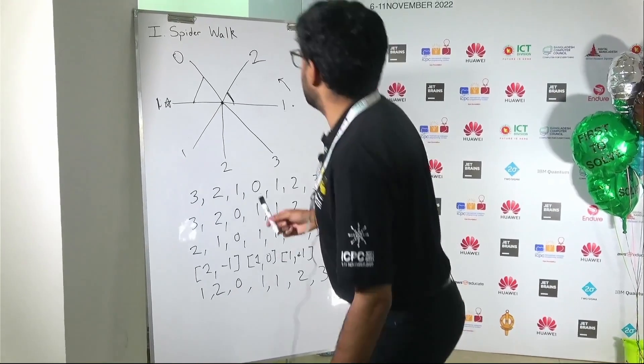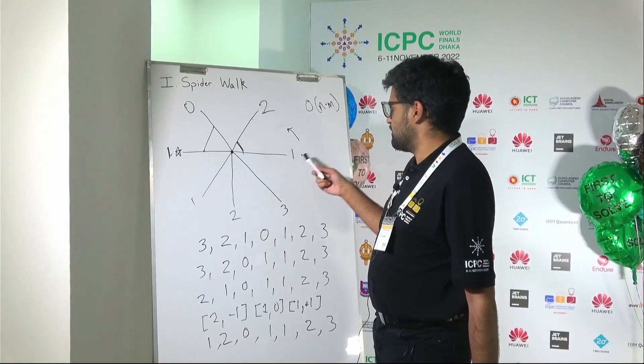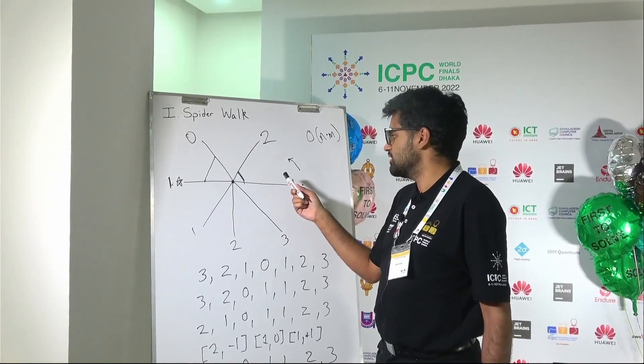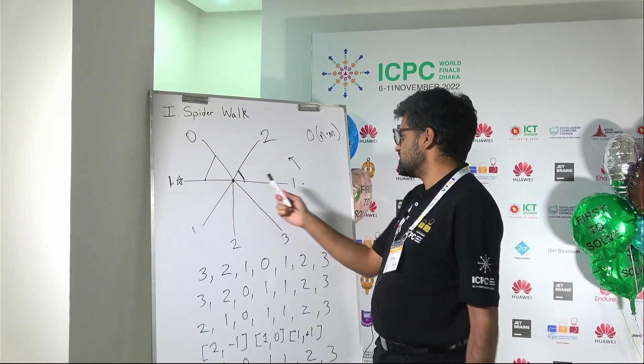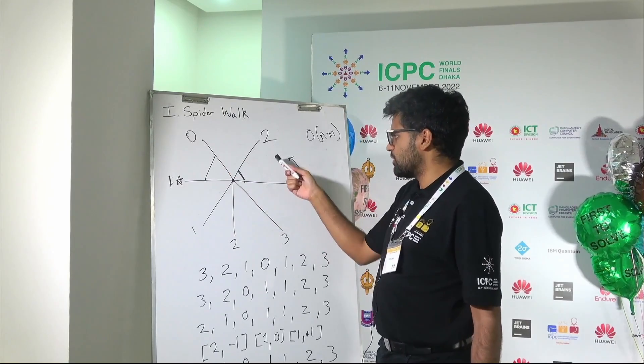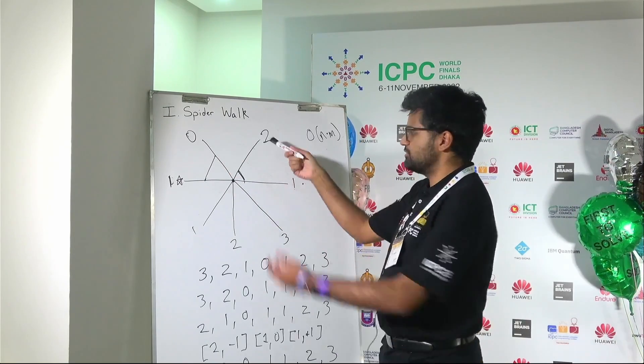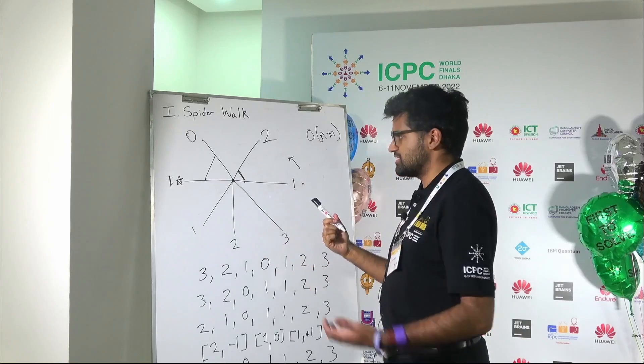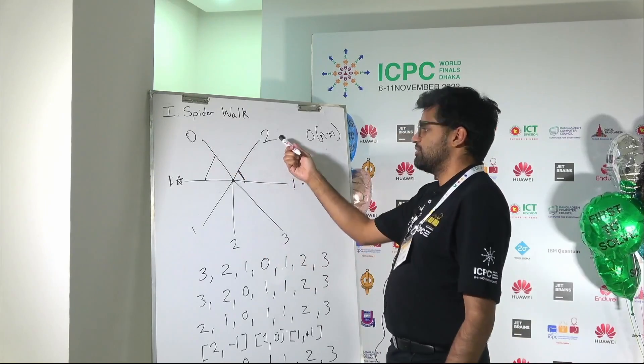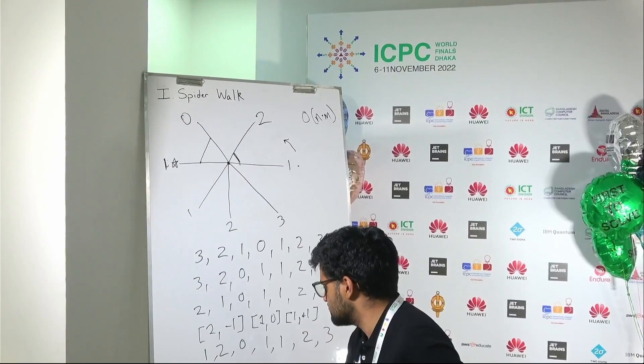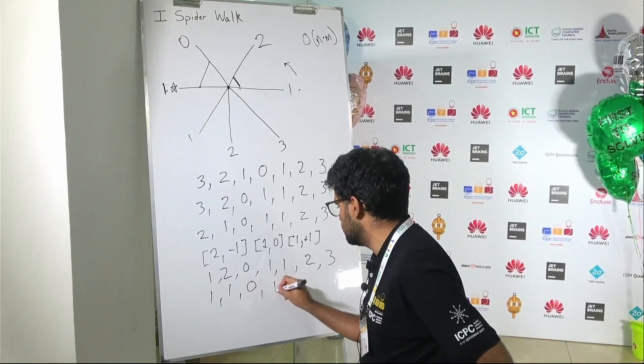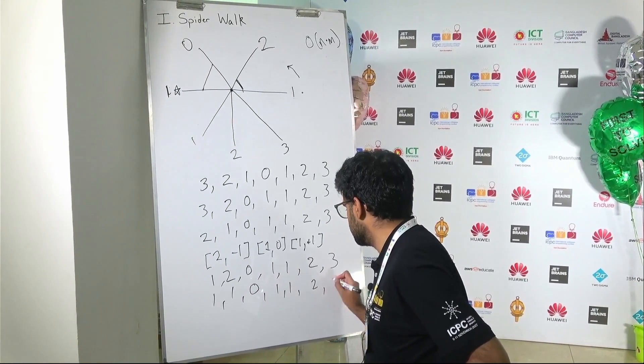The problem is when we do our sweeps we don't actually want to sweep from either of the new values. We need to also consider the neighbors. So in this case if we sweep from the 1, this 2 stays the same. If we sweep from the 2, the 2 still stays the same. But now if we sweep from the 0, this 2 is actually reduced to a 1. So the answer in this case is 1, 1, 0, 1, 1, 2, 3.